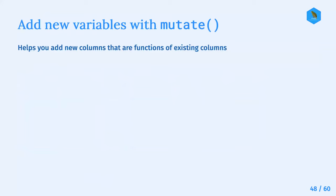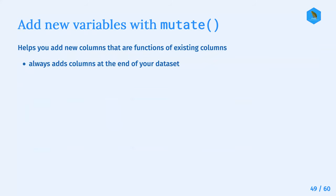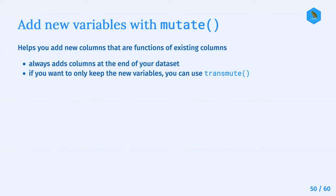The next segment is adding new variables with mutate. This function helps you add new columns that are functions of existing columns, and it always adds columns at the end of your dataset. If you want to only keep the new variables made with mutate, you can use transmute() instead.